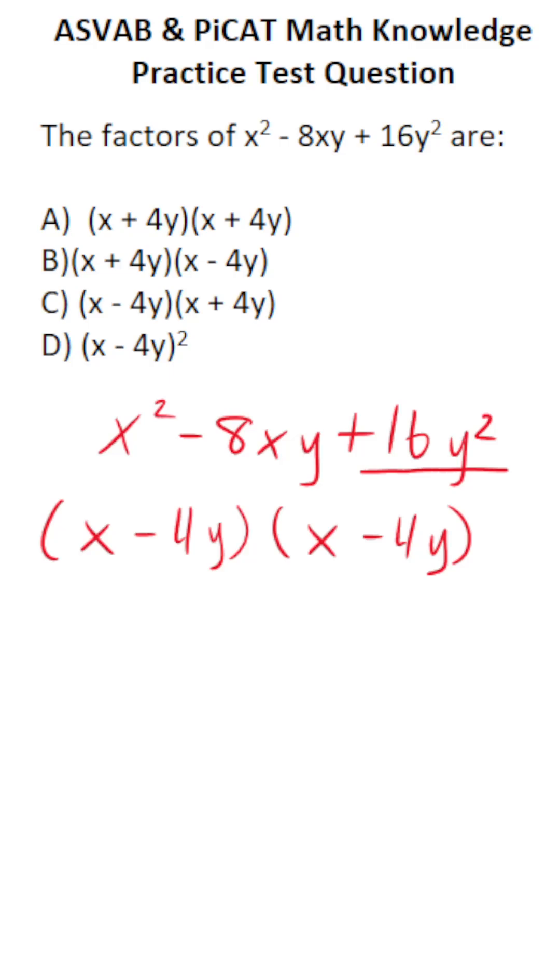So our answer to this one is, again, we have x minus 4y. It repeats itself twice. So this is going to be x minus 4y squared. The correct answer is D.